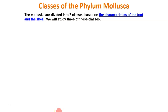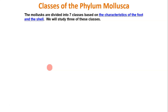We're going to keep talking about the phylum Mollusca, the mollusks. There are three different classes we're going to focus on: class Bivalvia, Gastropoda, and Cephalopoda. Mollusks are actually divided into seven classes, but we'll focus on those three. All of these organisms are placed in their different classes based on characteristics of their foot and their shell.